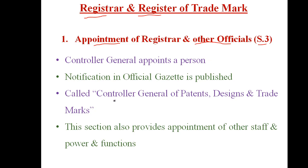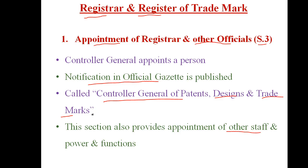The appointment of registrar and other officials are governed by Section 3 of the Trademark Act 1999. The controller general appoints a person to be known as Controller General of Patents, Design and Trademarks by publishing a notification in the official gazette regarding the appointment. This section also provides for the appointment of other staff required in the registration process and clarifies their powers and functions.